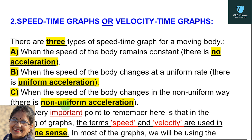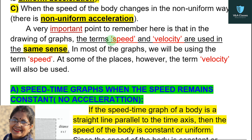C) when the speed of the body changes in a non-uniform way, there is non-uniform acceleration. Last class mein humne distance-time graph ko padha aur is class mein hum speed-time graphs ke baare mein discuss karenge. Speed-time graphs ko velocity-time graphs bhi kaha jata hai. Teen types hote hain: pehla jab kisi object ka speed constant ho yaani acceleration na ho; doosra jab uniform acceleration ho; teesra jab non-uniform acceleration ho.